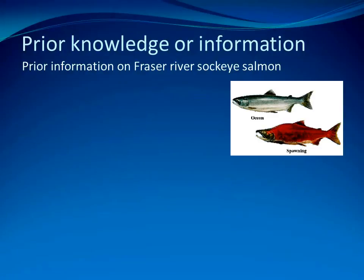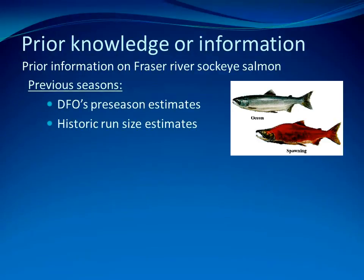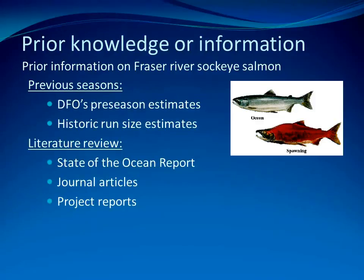For Fraser River sockeye salmon, our prior knowledge consists of information from previous salmon seasons. This can be in the form of the pre-season forecast, whereby the historic relationship between the number of spawners and the number of recruits is used to predict this year's forecast. Or prior information can be obtained directly from historic run size estimates — for example, if historically the run size for a particular stock has never exceeded 100 million sockeye, it's unlikely the run size would be as large in the coming year. Prior knowledge can also be obtained from literature, such as State of the Oceans reports, which can be used to adjust information based on the number of spawners four years ago by accounting for the environmental conditions encountered by their offspring. Journal articles and project reports may also contain important prior information, such as estimates of the likely production capacity of the river.